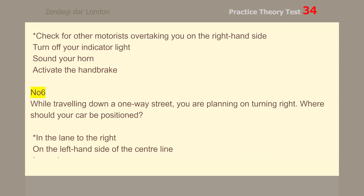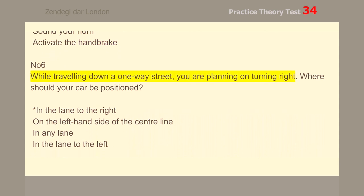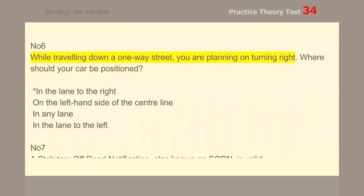Number 6. While traveling down a one-way street, you are planning on turning right. Where should your car be positioned? In the lane to the right.